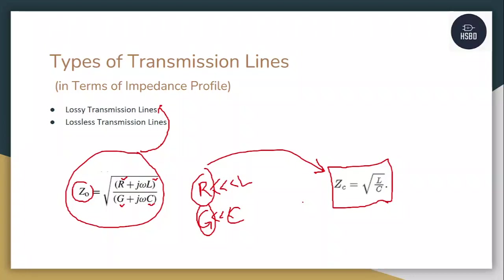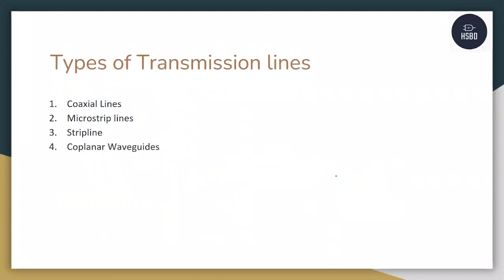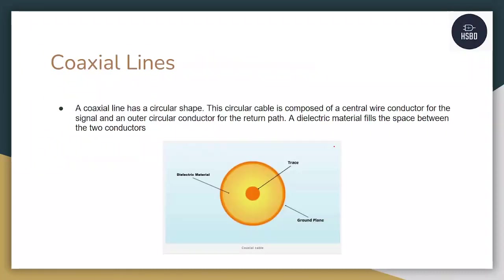When we talk about the types of transmission lines in terms of their structures, they are majorly divided into four parts: one is coaxial lines, second is microstrip lines, third is strip lines, and the fourth is coplanar waveguides.